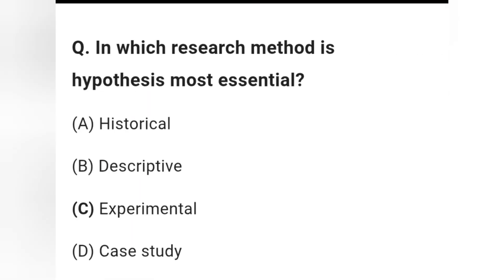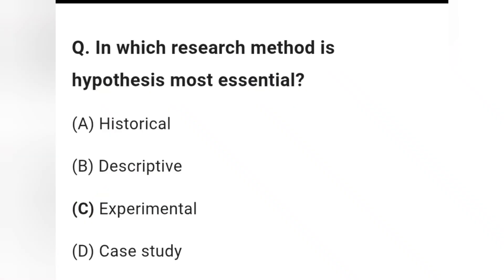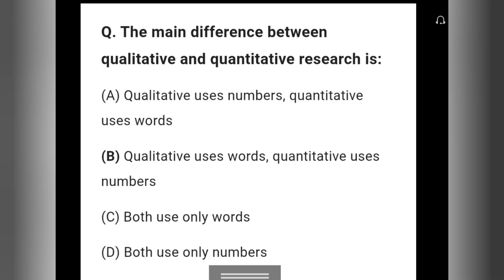Question 13: In which research method is hypothesis most essential? Options are historical, descriptive, experimental, and case study. Option C — experimental research — is the right answer, as hypothesis is most essential in experimental research.